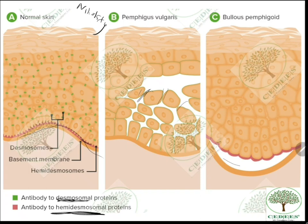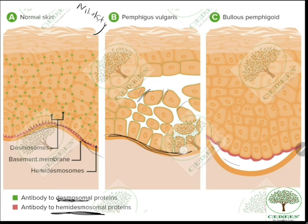In pemphigus, the blisters or bullae are quite superficial, easily eroded, and the Nikolsky sign is positive. Smears show acantholysis; basal cells remain attached to the membrane but cells above are disintegrated, giving a tombstone appearance on histopathology. In pemphigoid, the blisters are much deeper, and the Nikolsky sign is not positive.